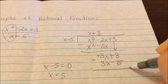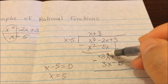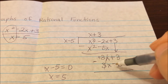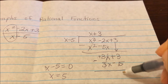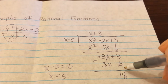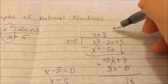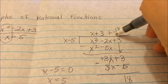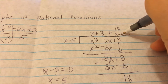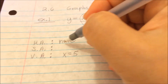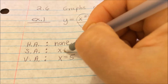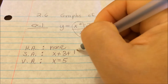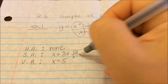Subtracting, the 3x cancels, and we get 3 minus a negative 15, which is a plus. So 15 plus 3 gives us 18 as the remainder. We write the remainder as 18 over x minus 5. So copying that over, the result is x plus 3 with a remainder of 18 over x minus 5.